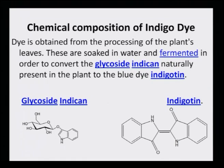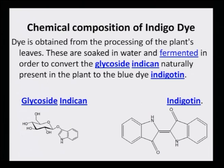If we try to look at the chemical composition of the glycoside indican and the indigo tin, which is the final indigo molecule, the dye is obtained from the processing of the plant's leaves. They are soaked in water and fermented in order to convert the glycoside indican, naturally present in the plant, to the blue dye indigo tin. There is an oxidative process where the glycoside goes away and the two molecules join up at the C-C bond. This is the structure of indigo dye.